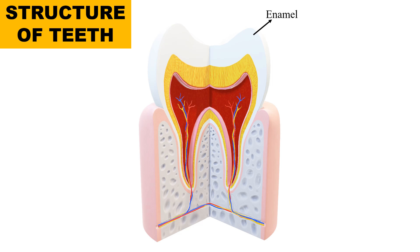The next part is dentine. Dentine is the main supporting structure of the tooth and the second hardest material after enamel. It is composed of 70% minerals — that is hydroxyapatite crystals — and 30% organic material, that is water, collagen, and mucopolysaccharides.